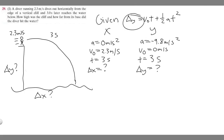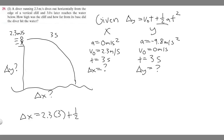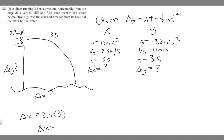Solving for delta x: delta x equals 2.3 times 3, plus one-half times zero times 3 squared. Since acceleration is zero, that second term becomes zero and drops out. So delta x equals 2.3 times 3, which gives 6.9. The units are meters per second times seconds, so the seconds cancel and delta x equals 6.9 meters. The diver lands 6.9 meters from the base of the cliff.